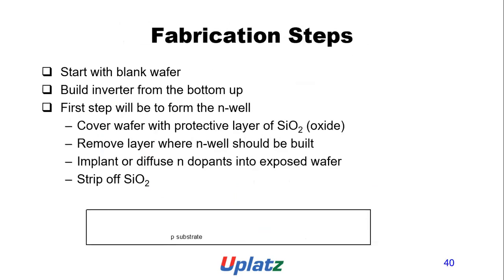Fabrication steps start with a blank wafer. Building the inverter from the bottom up, the first step is to form the N-well. Cover the wafer with a protective layer of silicon dioxide, remove the layer where the N-well should be built, implant or diffuse N-type dopants into the exposed area, then strip the silicon dioxide.